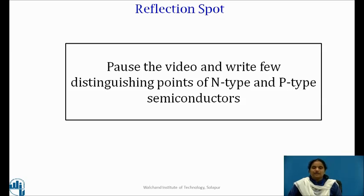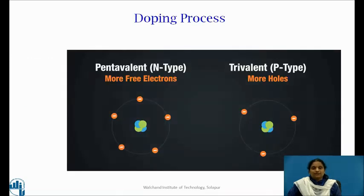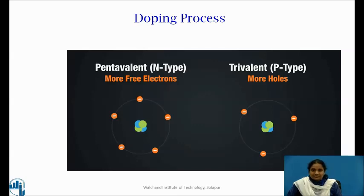Students, please pause the video and try to write down a few comparing points between n-type and p-type semiconductors. Please check for the correct answers. Now in the doping process, manufacturers melt a pure silicon crystal. This breaks the covalent bonds and turns the solid silicon crystal to a liquid, meaning the atoms don't have any set order or structure. Then impurity atoms are added. If we take pentavalent atoms and add them to liquefied silicon, it increases the number of free electrons and creates an n-type semiconductor. And we can add trivalent atoms which will increase the number of holes, creating a p-type semiconductor.